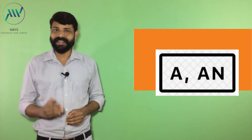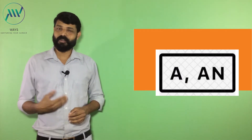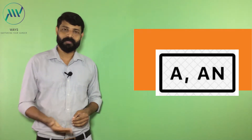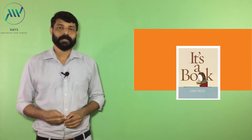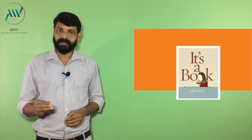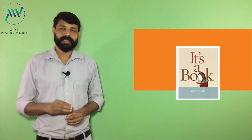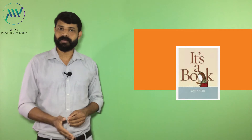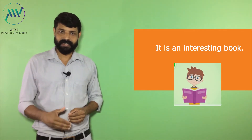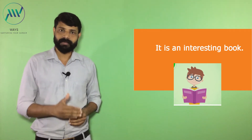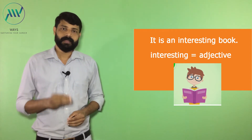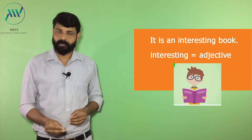Now we can talk about the great question: how to use articles A and AN. This has been a frequent topic in all community examinations. These indefinite articles are always used with countable singular nouns. For example, 'it is a book' — we used article A because 'book' is a singular countable noun. In some situations there can be adjectives before nouns, like 'it is an interesting book,' where we placed an adjective before the noun.